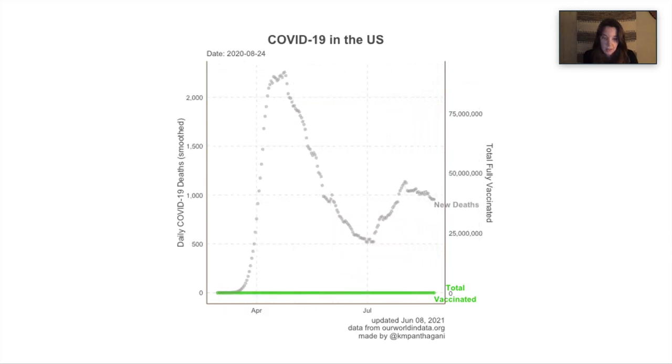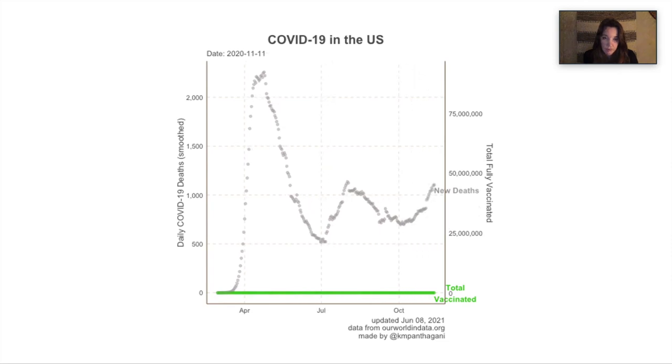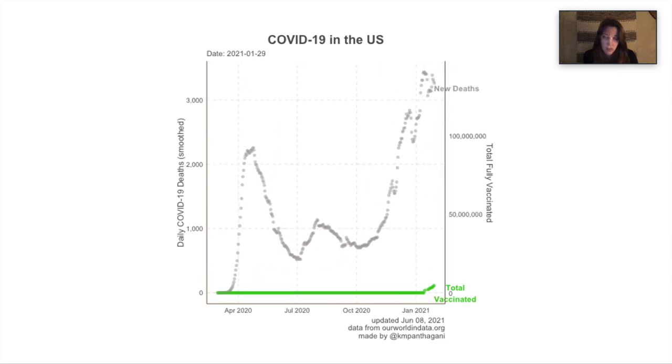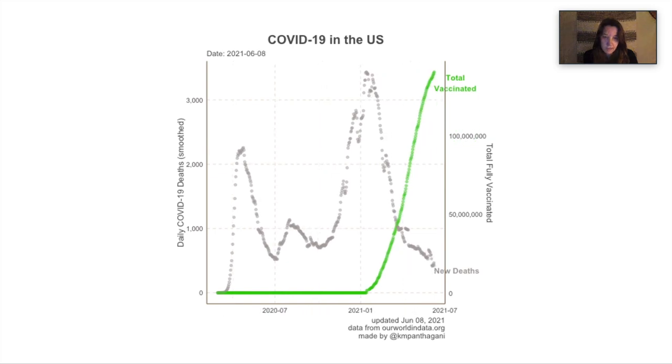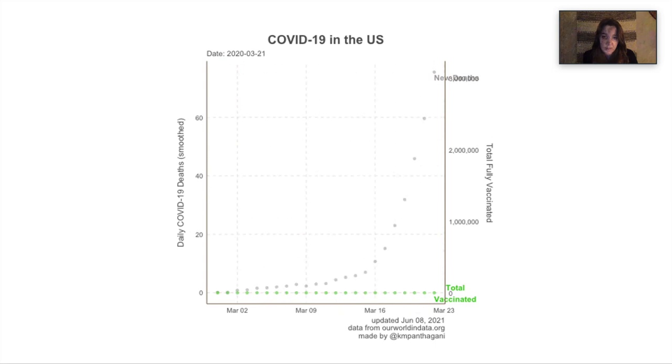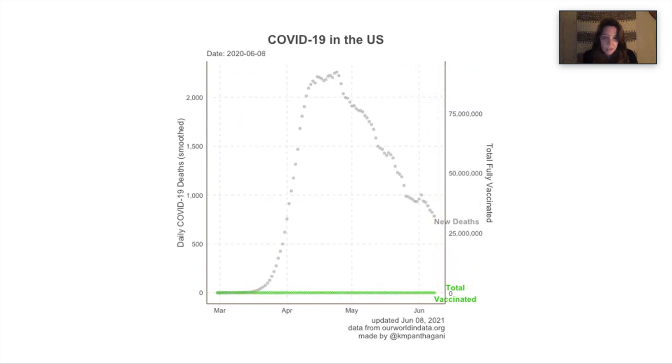So this is a plot I created recently using R and ggAnimate looking at the number of COVID cases in the US and also the total vaccinated. And so I found that having these plots be animated has added higher levels of communication that I can't get in a static plot. So that's what I'll be telling you about today.